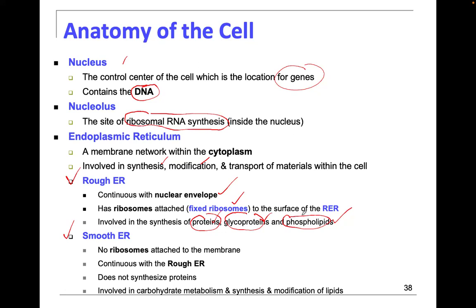We know from covering the cell membrane how important these components are: channels, enzymes, receptors, carrier molecules, cell identity markers, the major histocompatibility complex — very, very important.